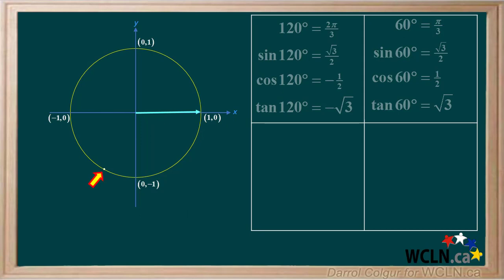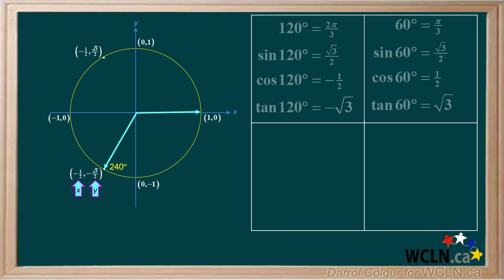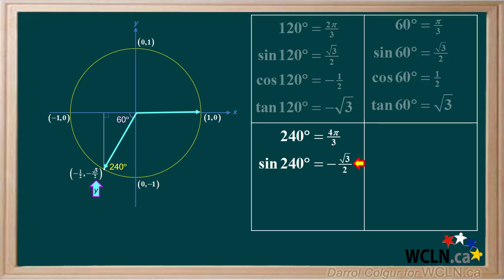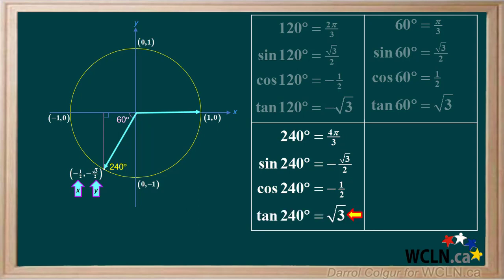Now we'll put a mark in quadrant 3. This corresponds to a principal angle of 240 degrees. We'll draw in an arrow to show the terminal arm of this angle. The coordinates are negative 1 half for x and negative root 3 over 2 for y. 240 degrees is equal to 4 pi over 3 radians. We'll draw in a right triangle here. The reference angle for 240 degrees is 60 degrees. The sine is y over r, which is negative root 3 over 2. The cosine is x over r, which is negative 1 half. The tangent is y over x, which is negative root 3 over 2 divided by negative 1 half, giving positive root 3. We see that in quadrant 3, the tangent is positive and the sine and cosine are both negative. This is true for all angles in quadrant 3.